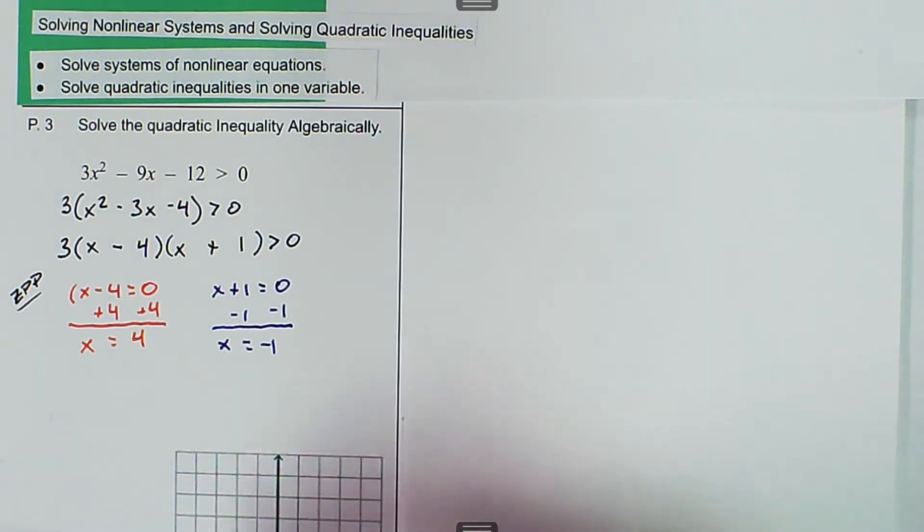So we get the point negative 1, 0, which is right here. And then we get the point 4, 0, which is right there. And we have those points graphed.